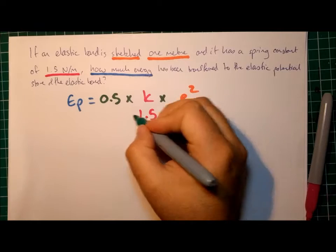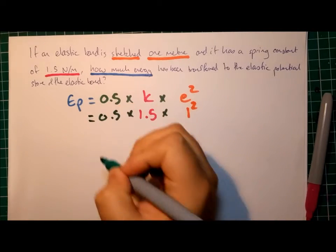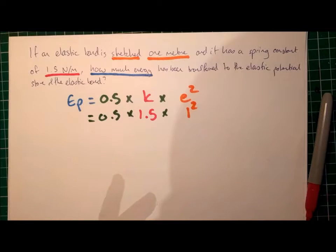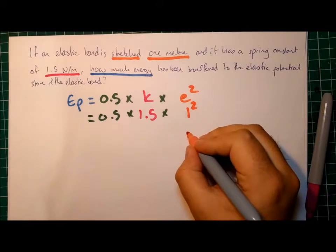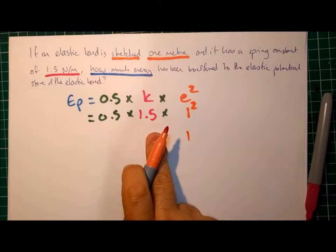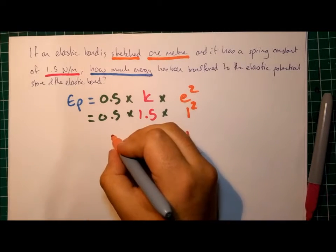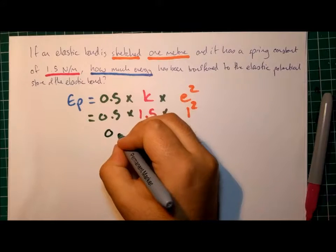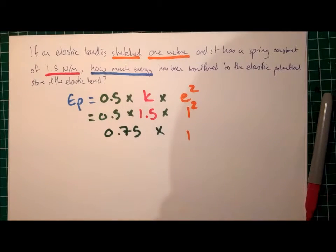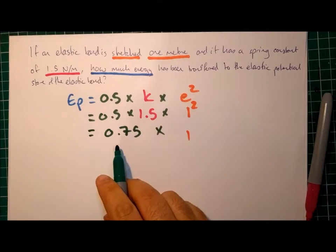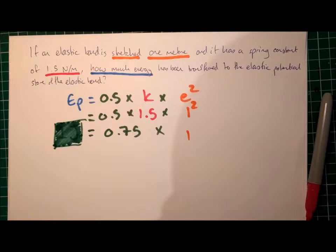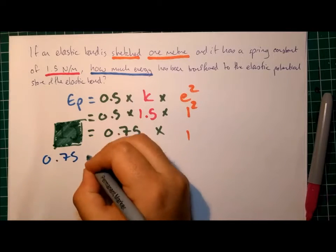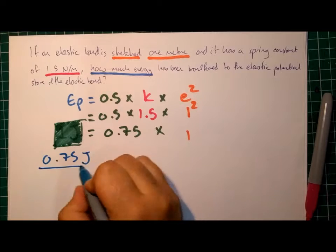Filling in the other numbers then, is there any of that we can make simpler? Well, actually we can start working out the answer. So 1 squared is going to leave us with 1. And half times 1.5, or 0.5 times 1.5 is going to give us 0.75. And then we're times in those together. And 1 times 0.75 is going to give us 0.75 joules, because it's energy, so it has to be in joules. So that is our final answer.